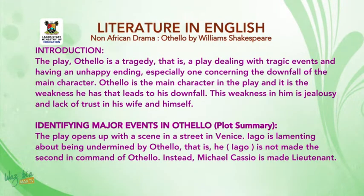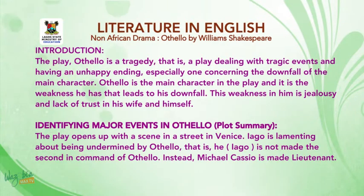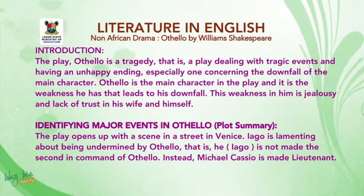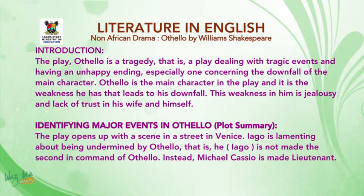We start with the introduction. The play Othello is a tragedy, that is a play dealing with tragic events and having an unhappy ending, especially one concerning the downfall of the main character. Othello is the main character in the play, and it is a weakness he has that leads to his downfall. This weakness in him is jealousy and lack of trust in his wife, Desdemona, which eventually leads to his killing his wife and himself. We start by identifying the major events in Othello — that is the plot summary.